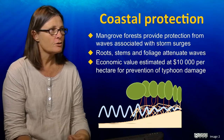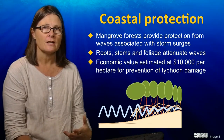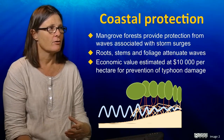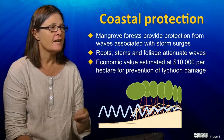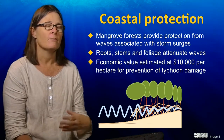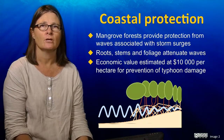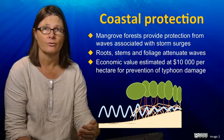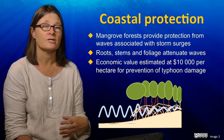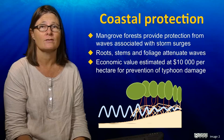The coastal protection function of mangroves comes from the protection they offer against waves and storm surges. As you can see from this diagram, quite high wave energy is attenuated by the sediments, by the roots, by the stems, and by the foliage of the mangrove trees, which gives some protection to structures behind the mangroves, such as a seawall. The economic value of mangroves in protecting from typhoons in Asia has been estimated to be about $10,000 per hectare.